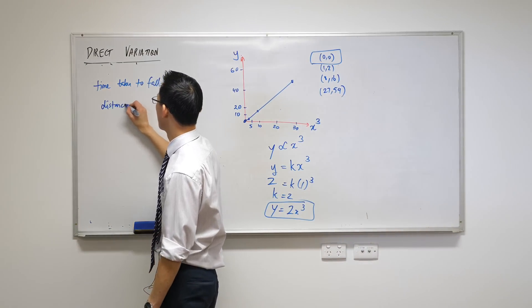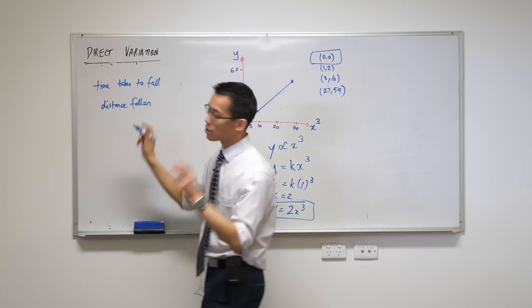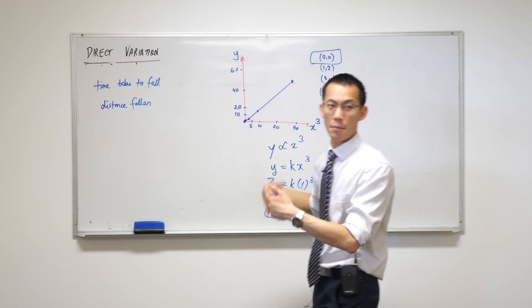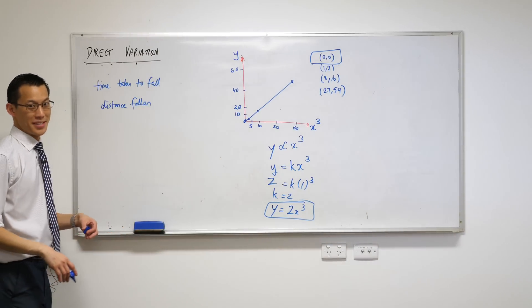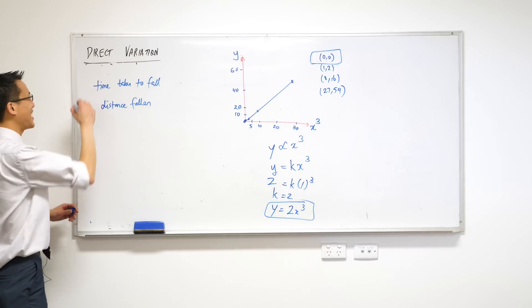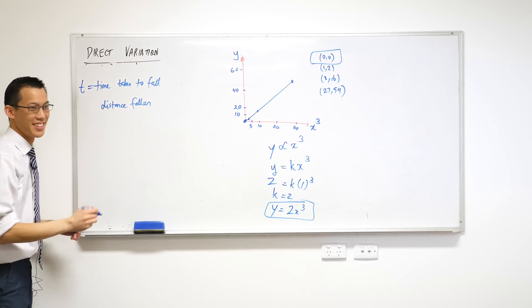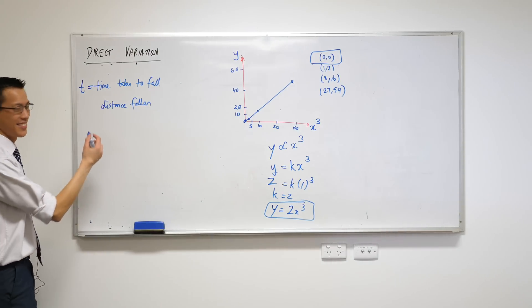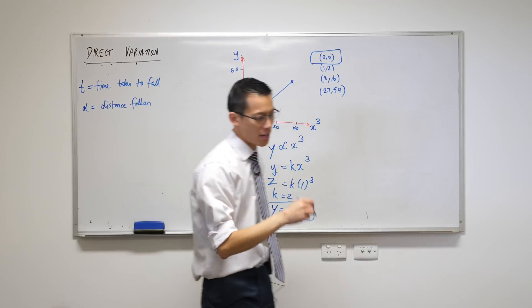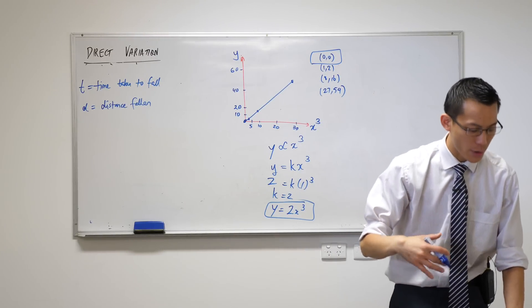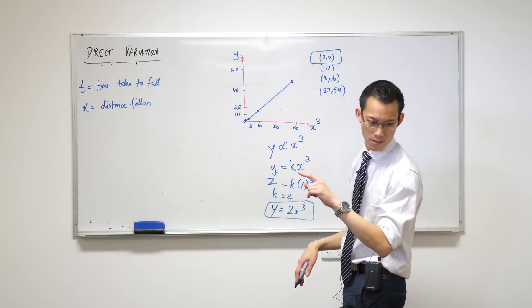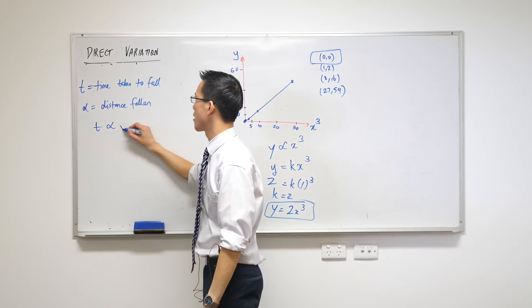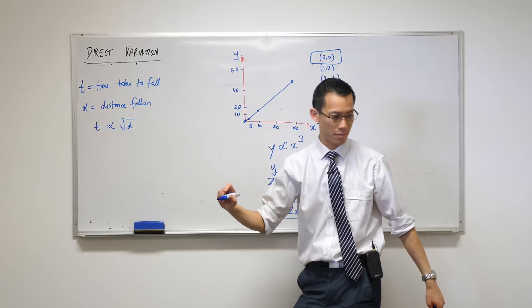So these are the two quantities that they're interested in. Being that these are the two quantities, I'm going to give them names. What's a common-sense name for time? T. And distance fallen? D. Okay, easy. So they say that time taken to fall varies directly with the square root of the distance. So t varies directly with square root of the distance.